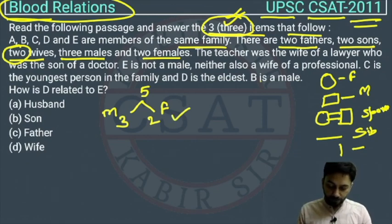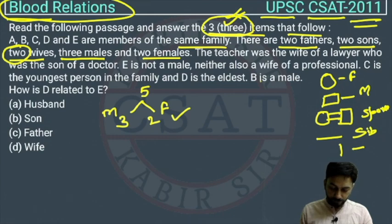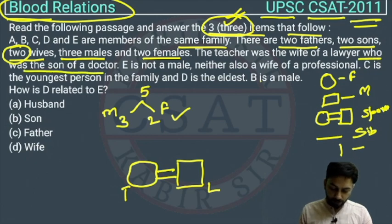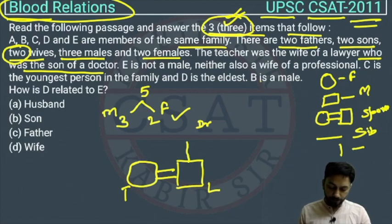Now let us draw the family tree. The teacher was the wife of a lawyer. So this lady is a teacher and is the wife of a man who is a lawyer. And this lawyer was the son of a doctor. So the lawyer is a son of a doctor, meaning the doctor will be placed in the generation above. We don't know yet whether the doctor is husband or wife.